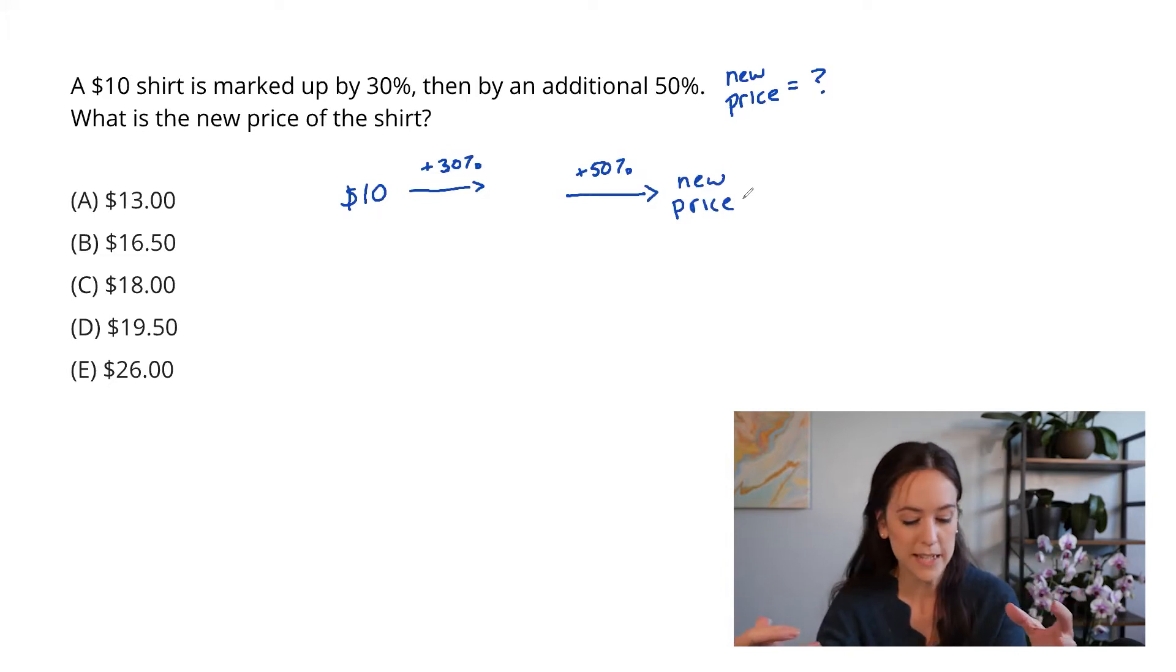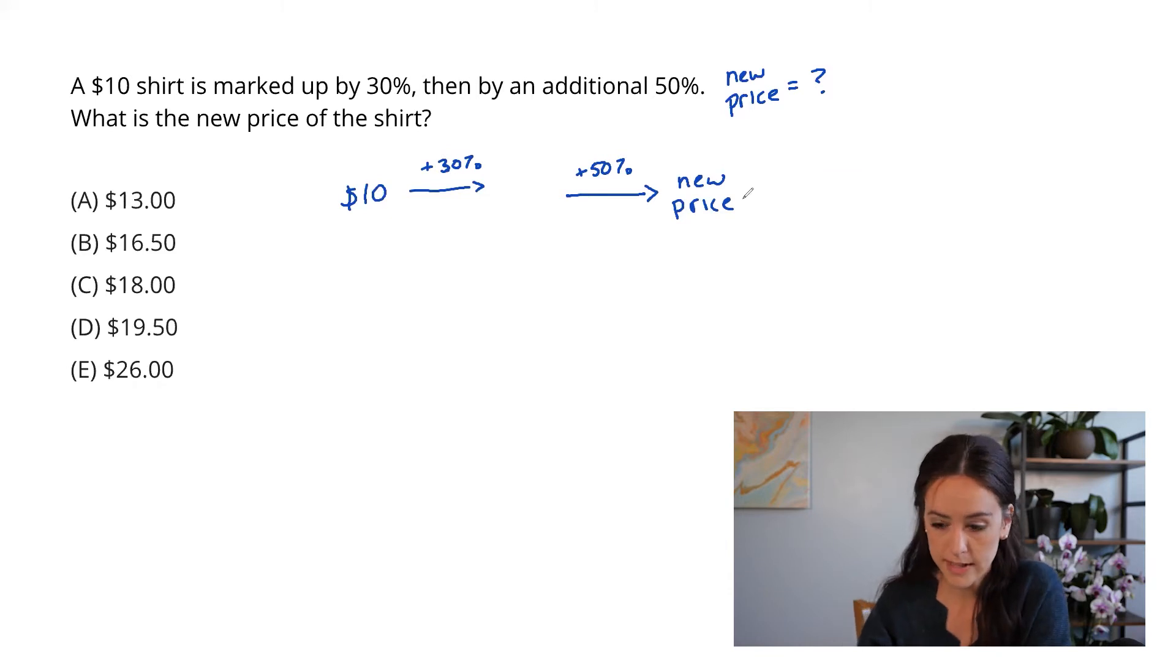The first thing we have to do here is increase $10 by 30%. You might intuitively know that this is $13. You might not, and that's great too. But either way, let's slow this down so we know what's really going on when we see maybe a harder question in the future with percents.